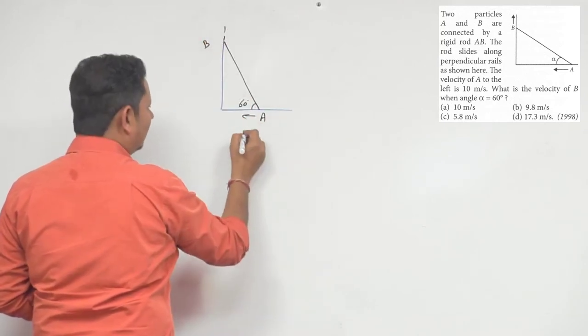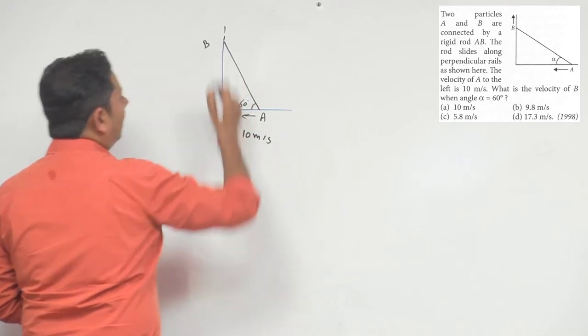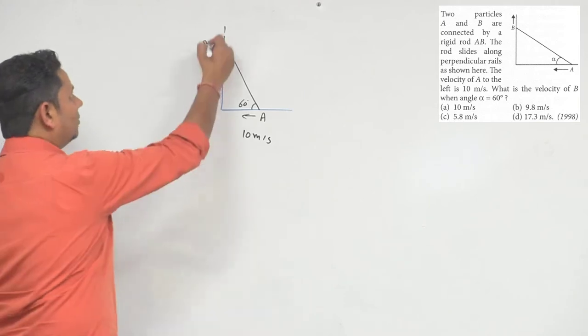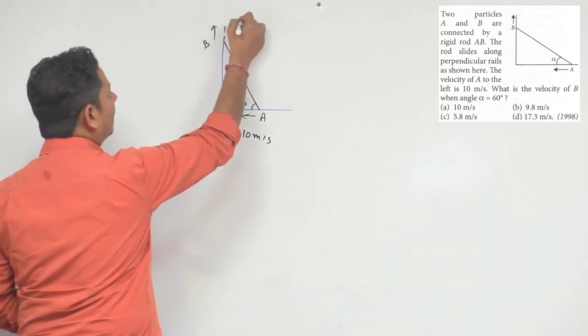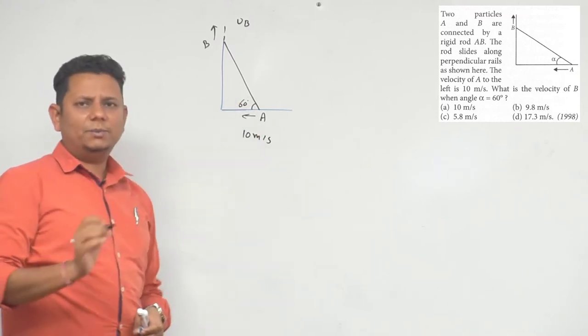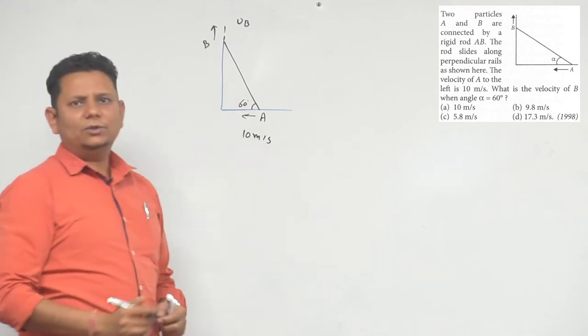Particle A to the left is 10 meters per second. When you go here, we will find the velocity of B. In this direction, we will identify the velocity of A and the angle at this time. Now, this is two ways. Constraint motion is a question.